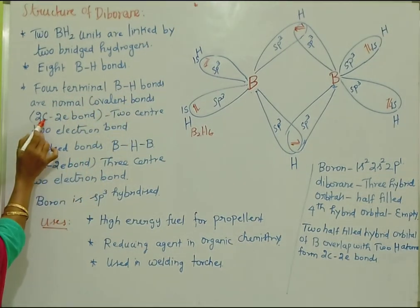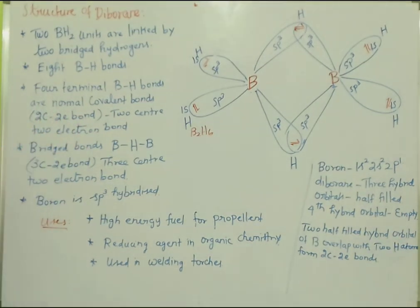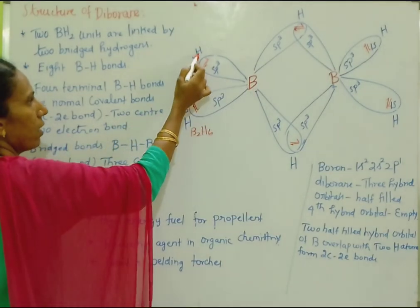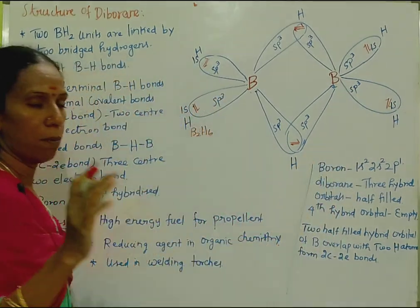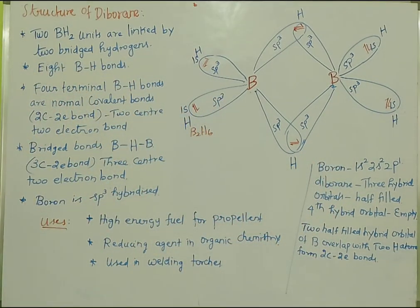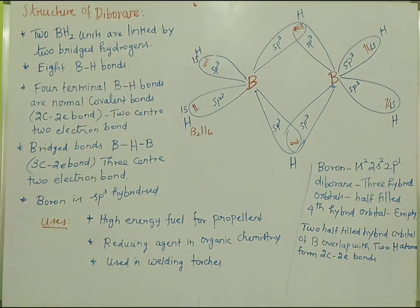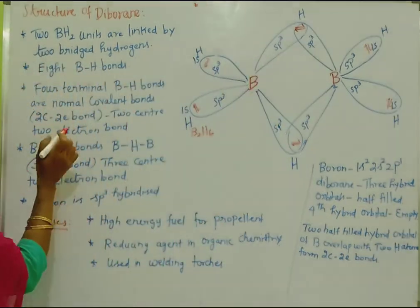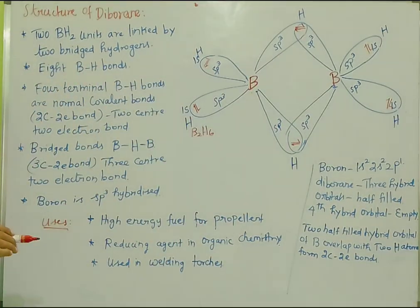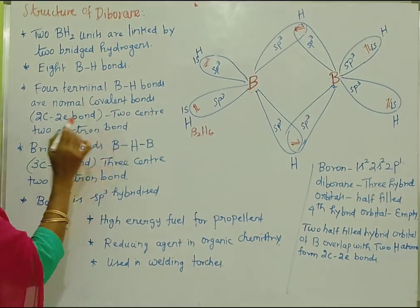So what do we call these? They are 2-center, 2-electron bonds. The terminal BH2 groups — these are normal covalent, two-center, two-electron bonds.